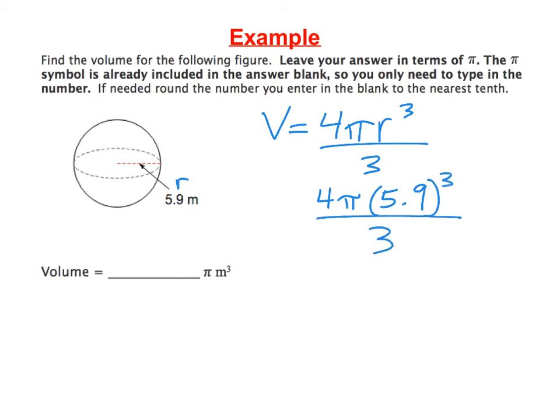When you put this in your calculator, again, do the 5.9 to the power of 3 first. And I'm going to wait to do my rounding until the end. So right now in the top, 5.9 to the power of 3 is equal to 205.379.